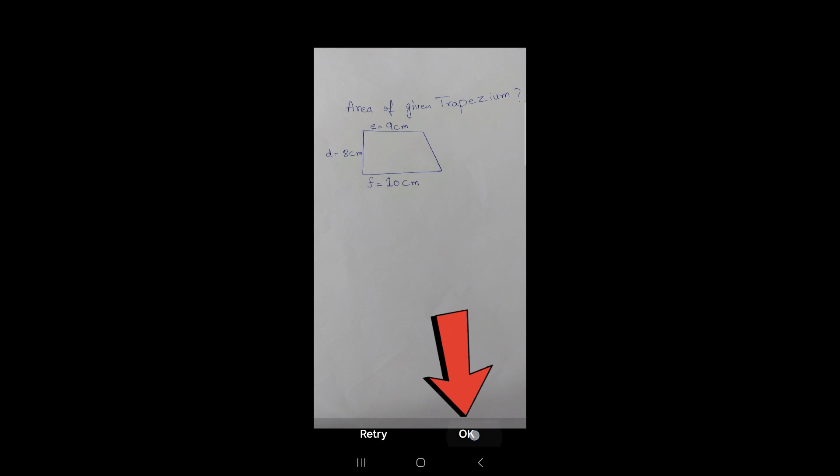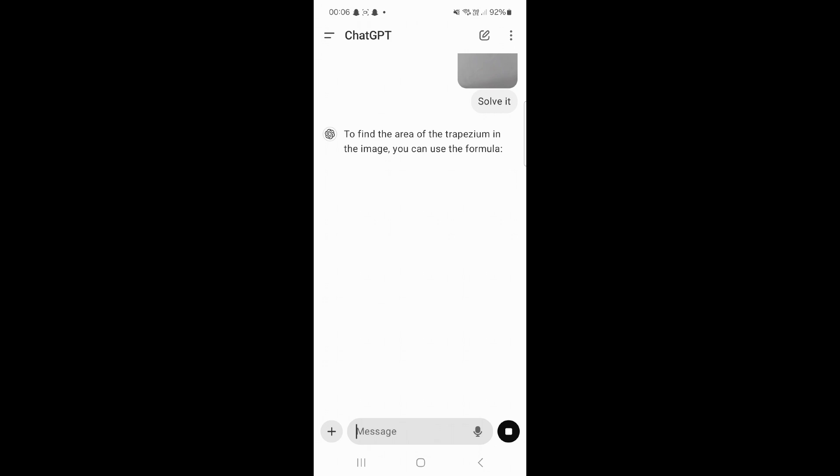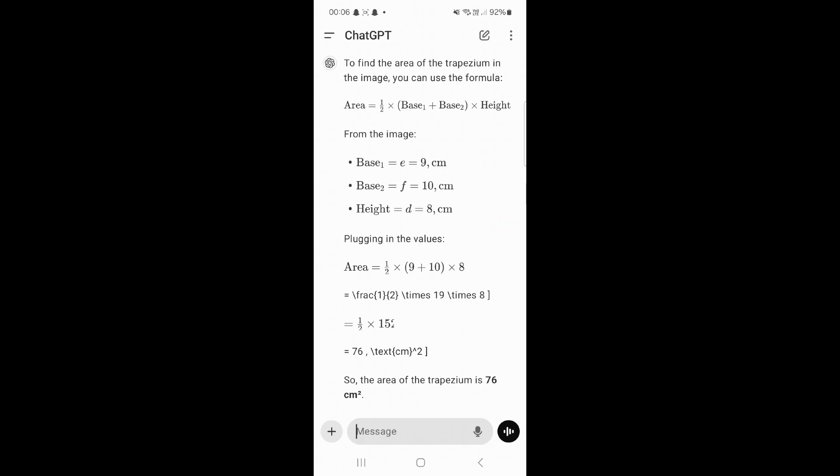We will click on the OK button, and now we need to simply write solve it and then after that press this black arrow button. And here you can see ChatGPT has started solving the question automatically and it has given us the answers after doing the step-by-step solution.